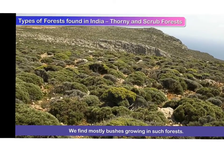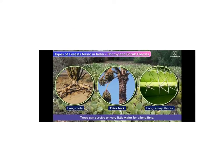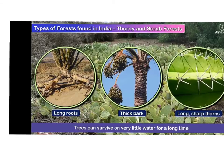We mostly find bushes growing in such forests. The trees found in thorny forests have long roots, thick bark, and short and sharp thorns, because they have to survive on very little water for long periods. The roots are very long, the bark is thick, and the thorns are very sharp.